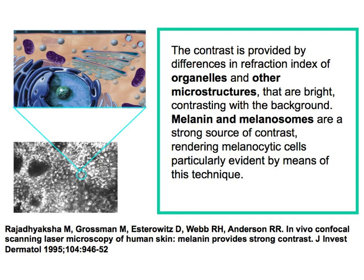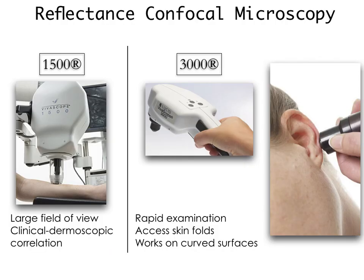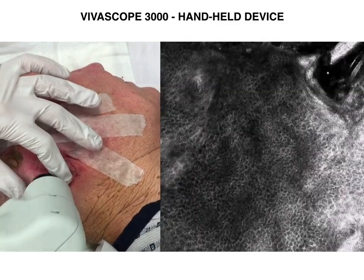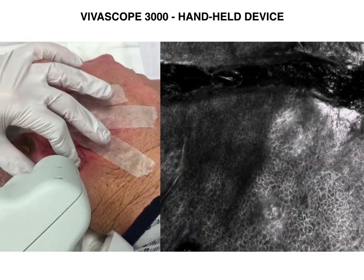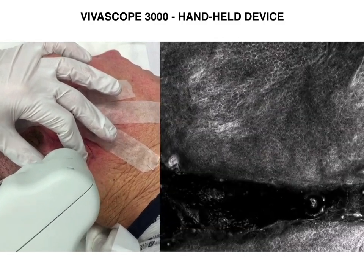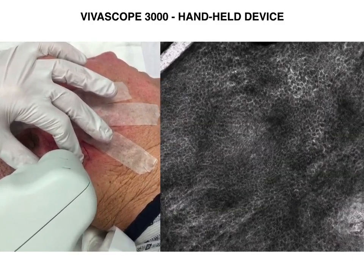Reflectance is generated by different structures. Melanin is the major source of reflectance, thus it is well indicated in melanocytic tumor diagnosis. Different tools are available: the Vivascope 1500 is a larger probe which enables examination of wide skin areas, whereas the Vivascope 3000 is a handheld device providing real-time confocal images of a millimetric spot, useful especially for difficult-to-reach areas.